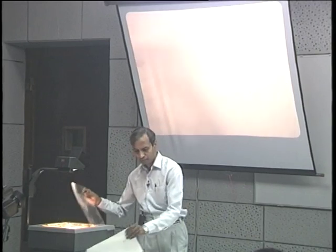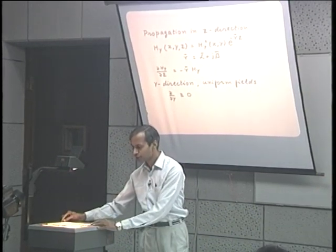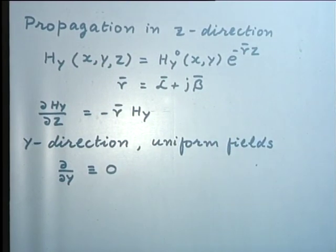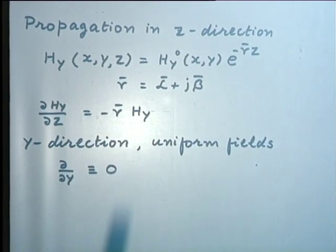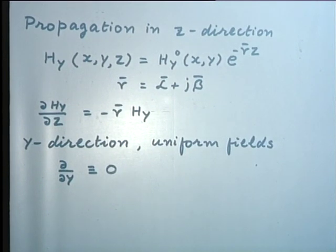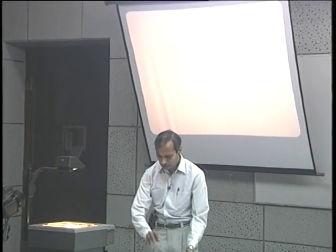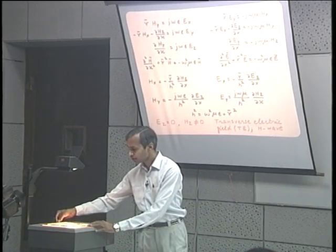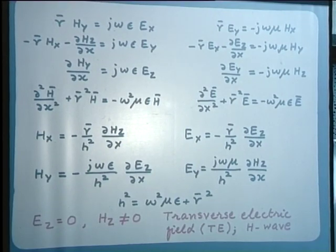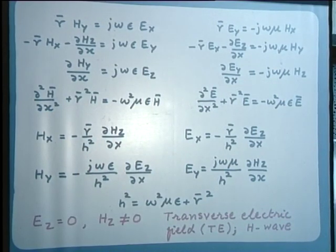These equations were simplified by making the following considerations. We assume that the wave propagates in the z direction with propagation constant γ̄, so that the derivative in the z direction can be replaced by minus γ̄. Since the structure is infinite along the y direction, no particular conditions are imposed in that direction, and we consider that the derivative with respect to y of all field components can be replaced by zero. With these considerations, we obtained the simplified versions of the Cartesian components of Maxwell's equations.